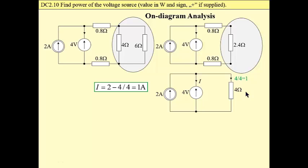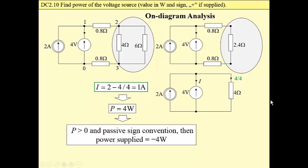Then having this resistance and knowing voltage across this resistance which is designated by our voltage source, we may calculate this current. And from Kirchhoff's current law for this node, we may calculate current that flows through the voltage source. This current is 1A. Then power of this source is 4W, and this source satisfies passive sign convention.